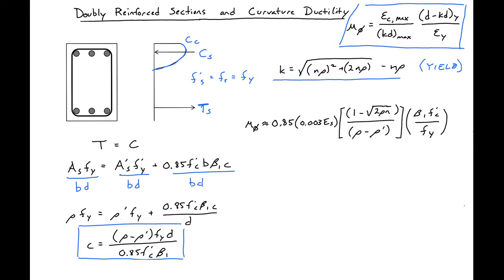When we substitute all these values into our expression for curvature ductility, we'll get the expression shown here. And this is making the same assumption in terms of n rho as we did in our last derivation.